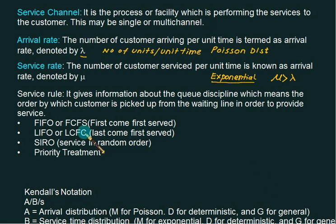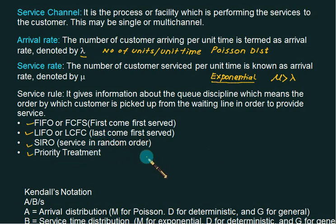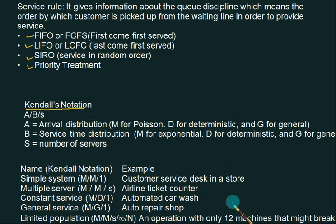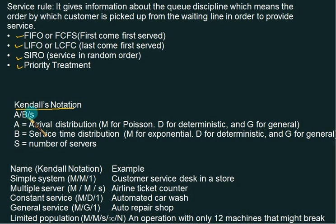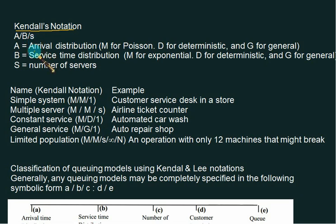Customers may also come in groups, in which case even if service is fast the customer has to form a queue. The service rule may be first come first out — the person who comes first gets served first — last in first out, service in random order, or sometimes priority treatment like VIP treatment. For physically handicapped we can give priority service. The waiting line model investigated in practical cases is very complicated. To understand the model, the Kendall notation is used: A slash B slash C, where A stands for arrival distribution, B stands for service distribution, and C stands for number of servers.